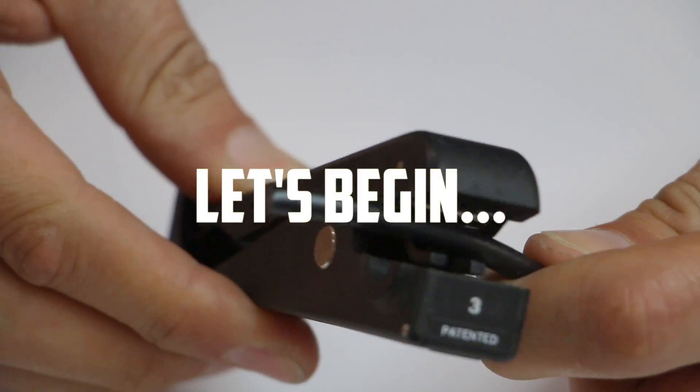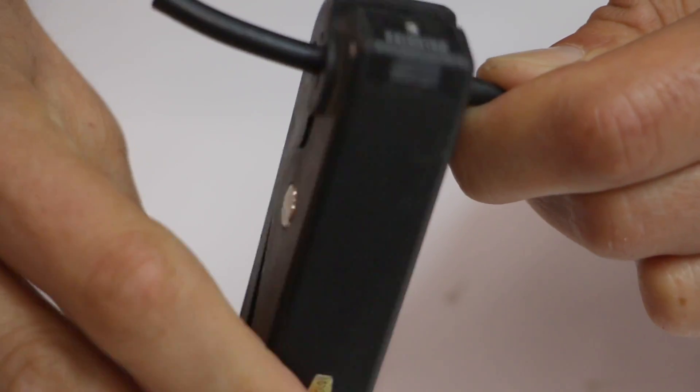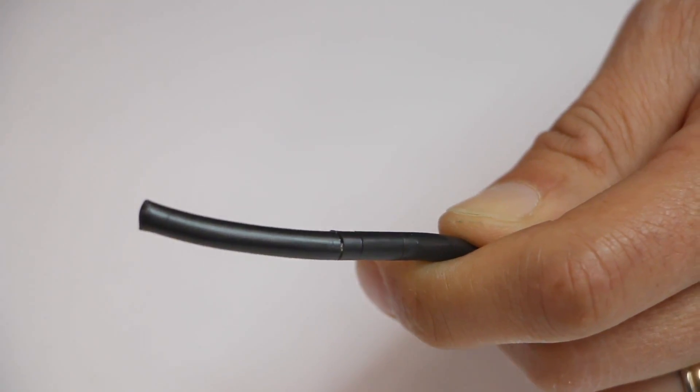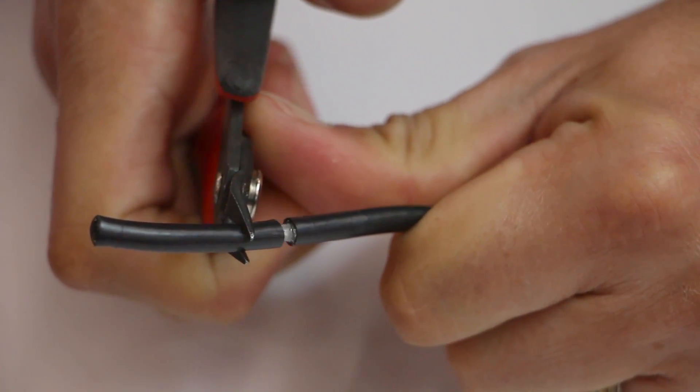First, use the stripper tool to make the necessary cuts. A stripper tool will make multiple cuts in one pass. Next, remove the excess black insulation.